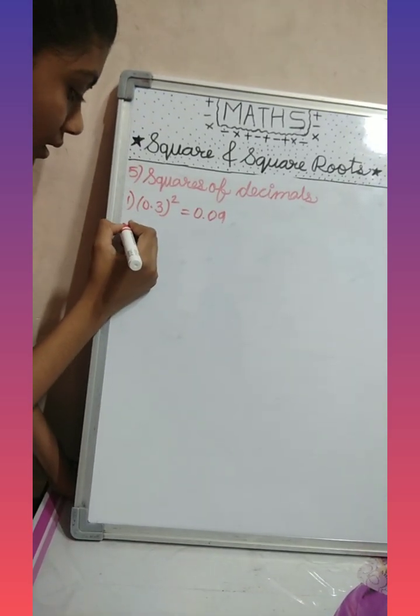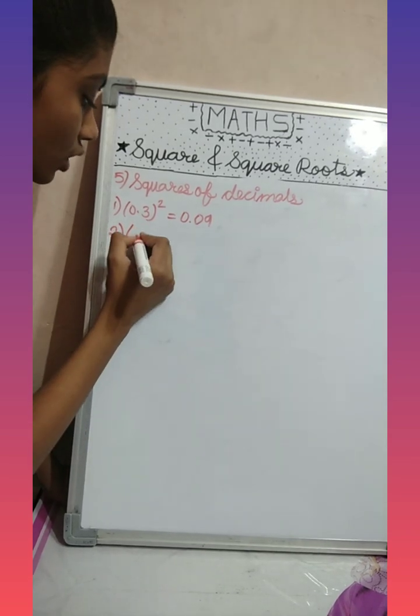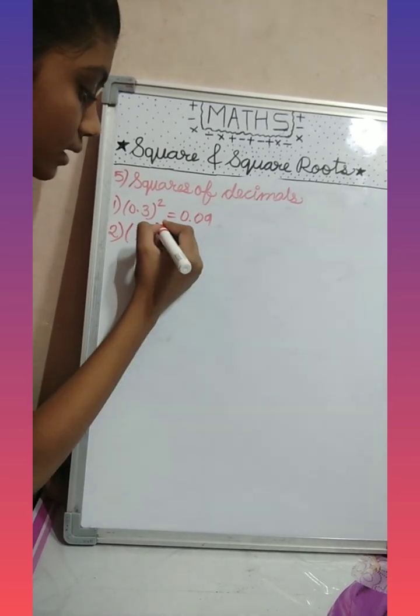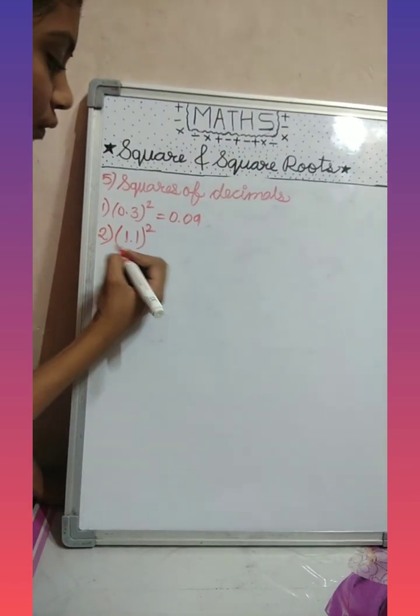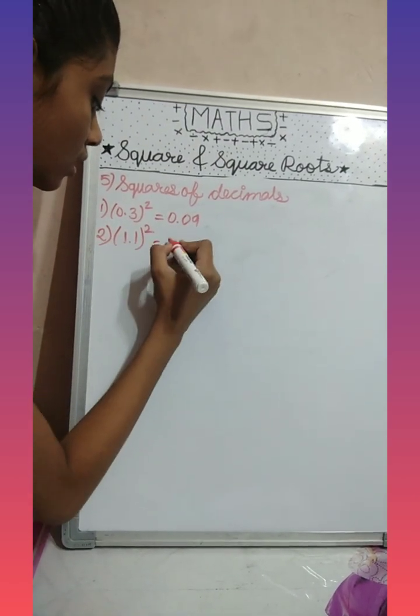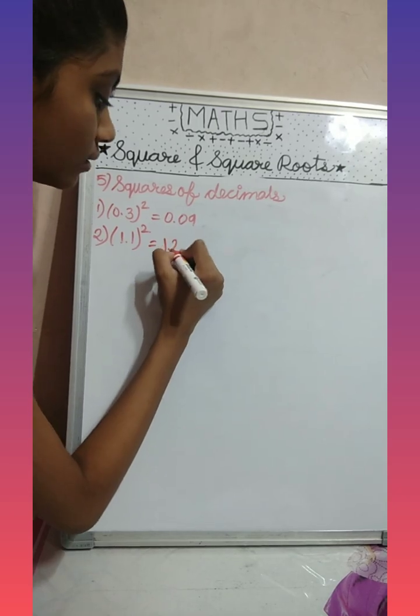Let's see next example: one point one square. So the square of one point one is one point two one.